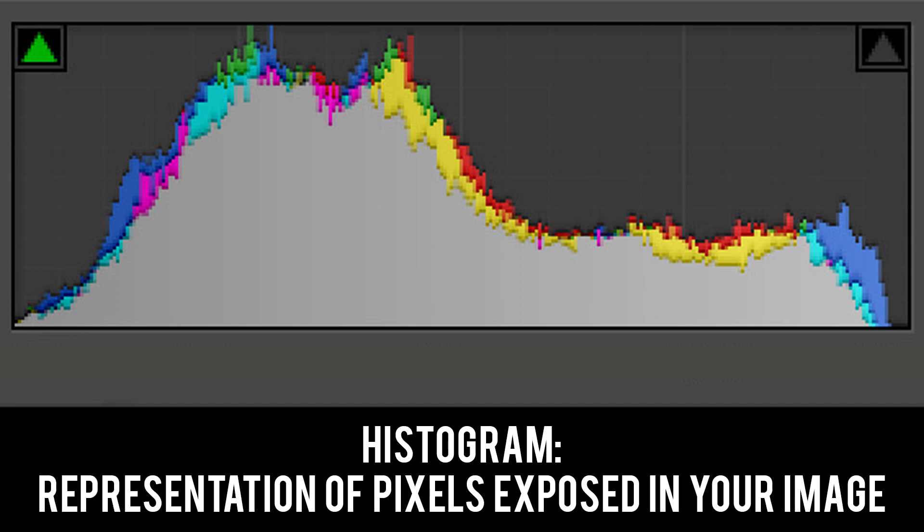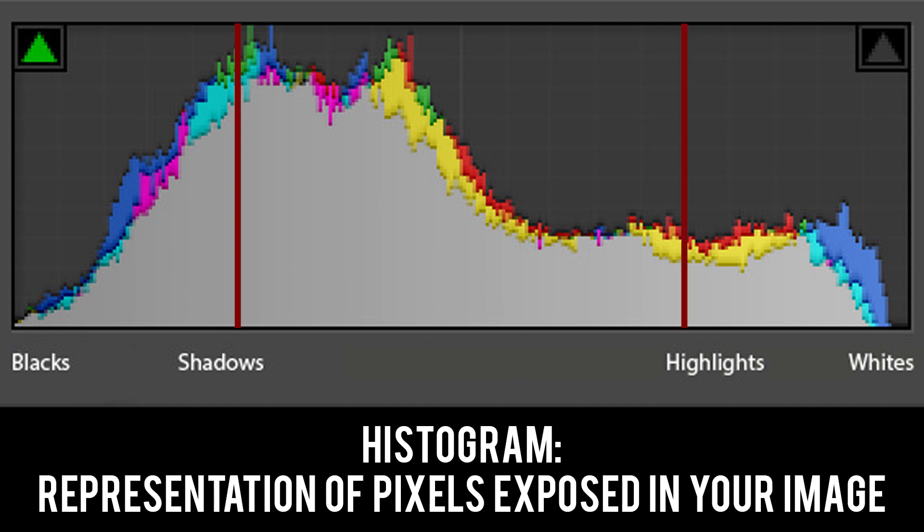First things first, let's explain what a histogram is. A histogram is a representation of the pixels exposed in your image. The left side of the histogram is going to be your blacks and shadows, the right side is going to be your highlights and bright areas, and the middle section is going to be your midtones.